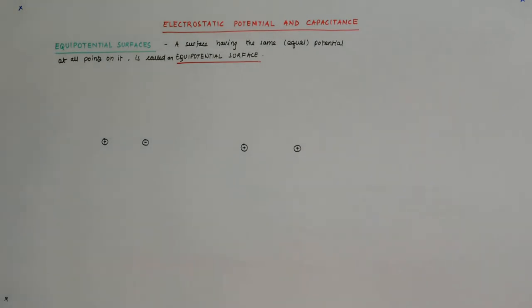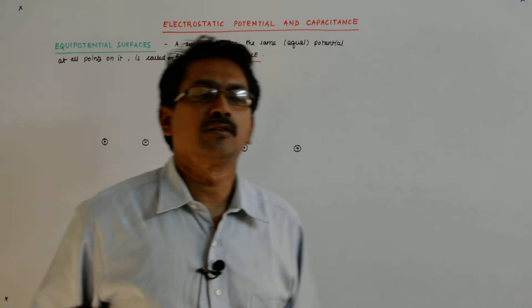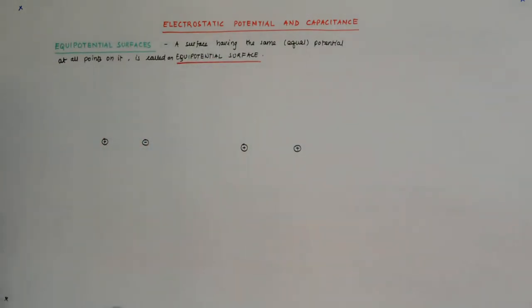One thing that we understood about the equipotential surface was that it is always perpendicular to the electric field at all points.